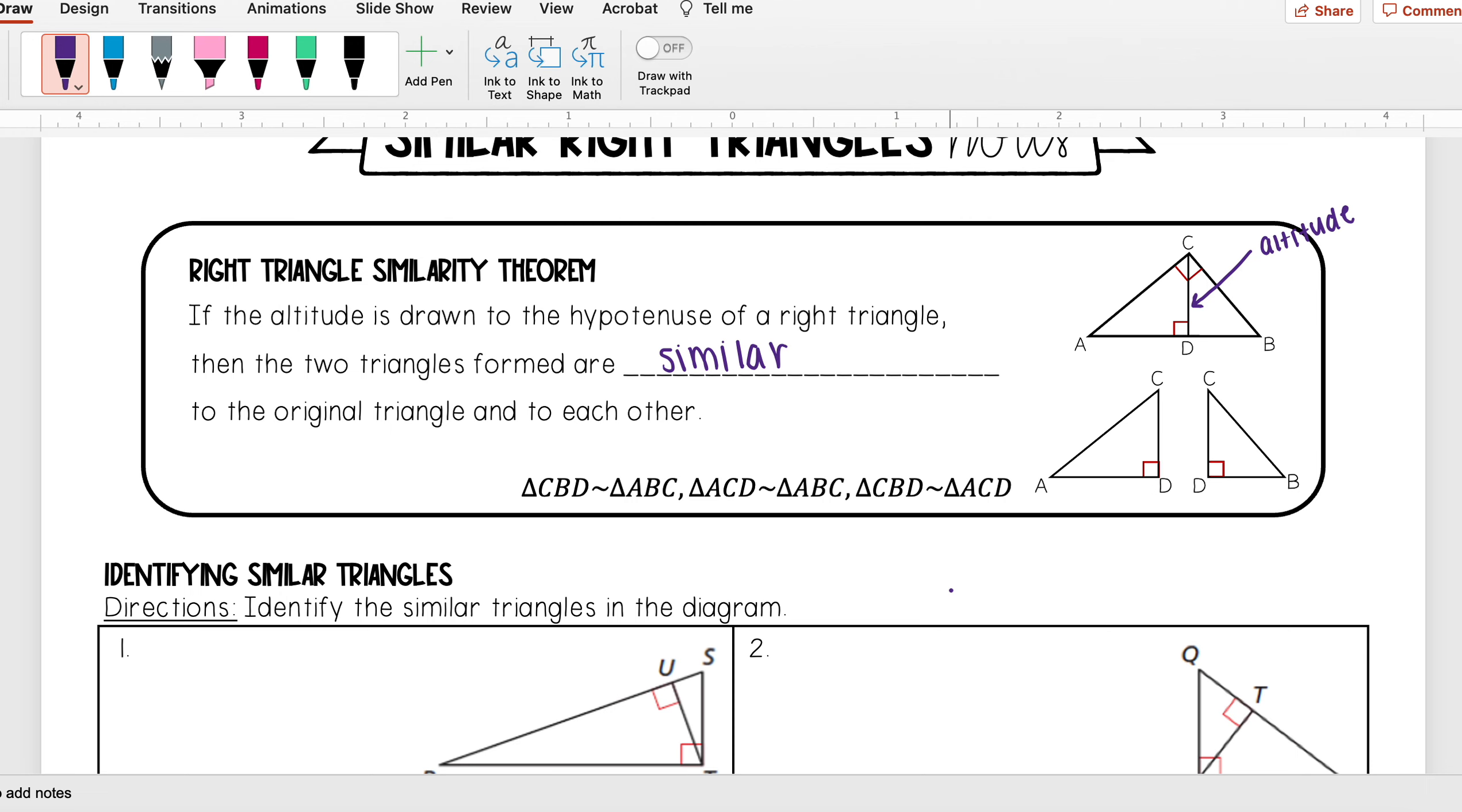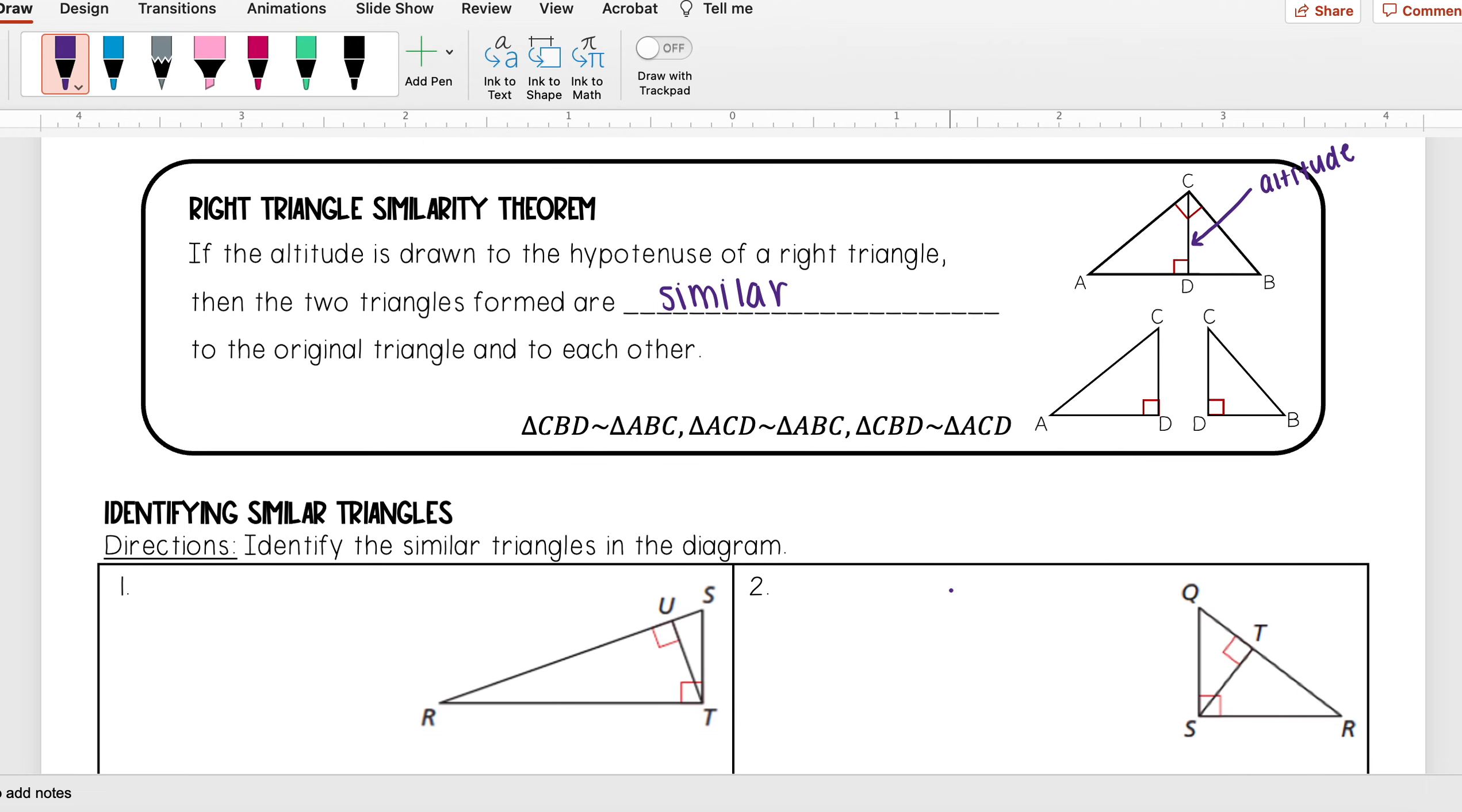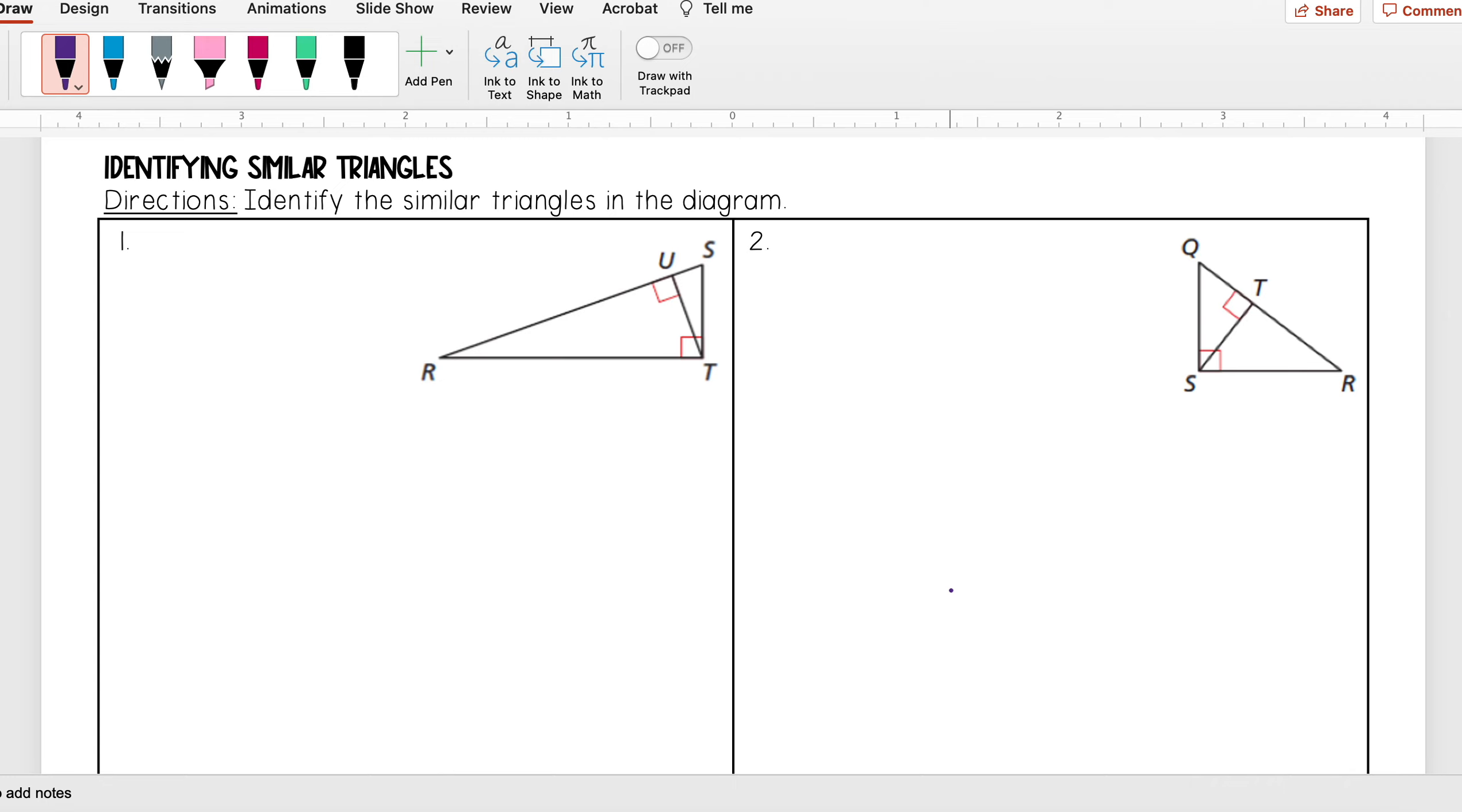It can be kind of tricky sometimes to determine or identify the similar triangles and write that similarity statement. For this first example, we're going to practice doing that. We're going to identify the similar triangles in the diagram. Something that helps me when I am identifying the similar triangles is I like to go ahead and redraw each of these three triangles in the same orientation.